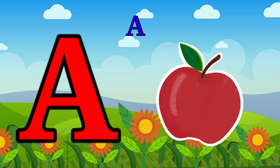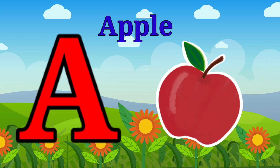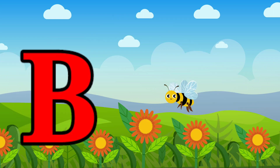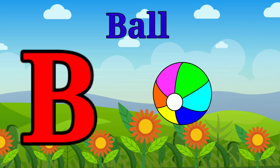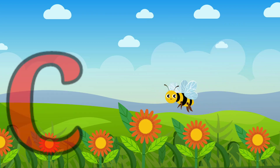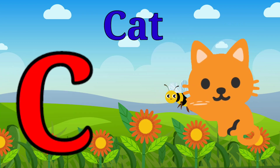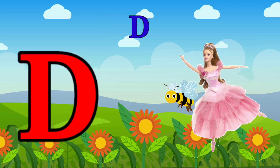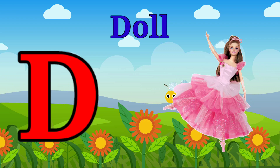A is for apple, a-a-apple. B is for ball, b-b-ball. C is for cat, c-c-cat. D is for doll, d-d-doll.